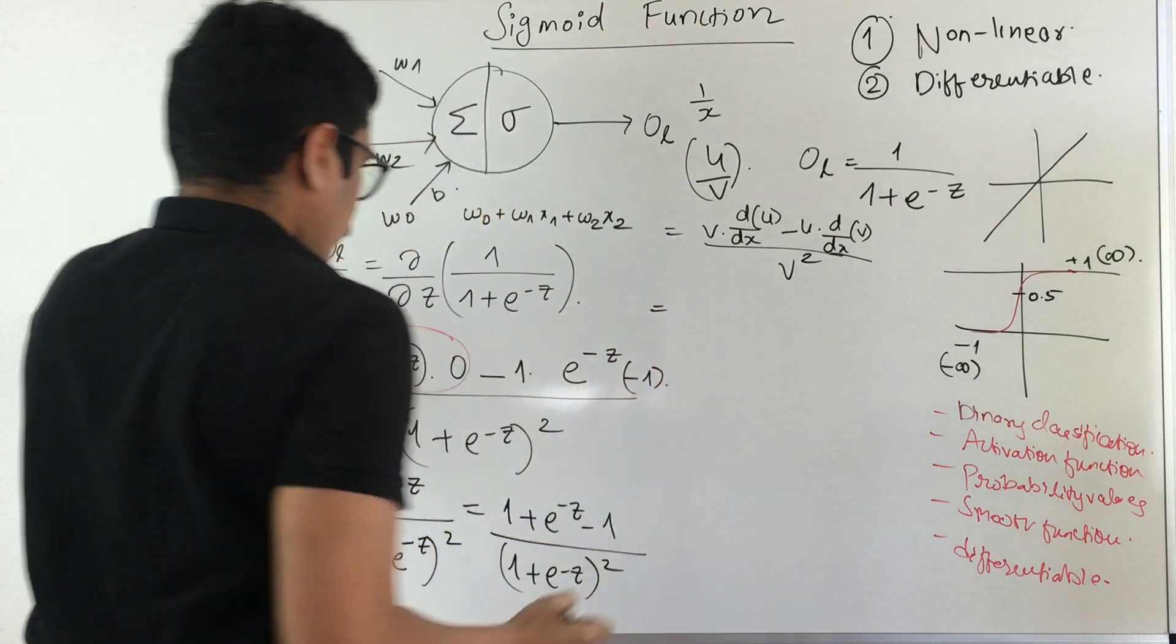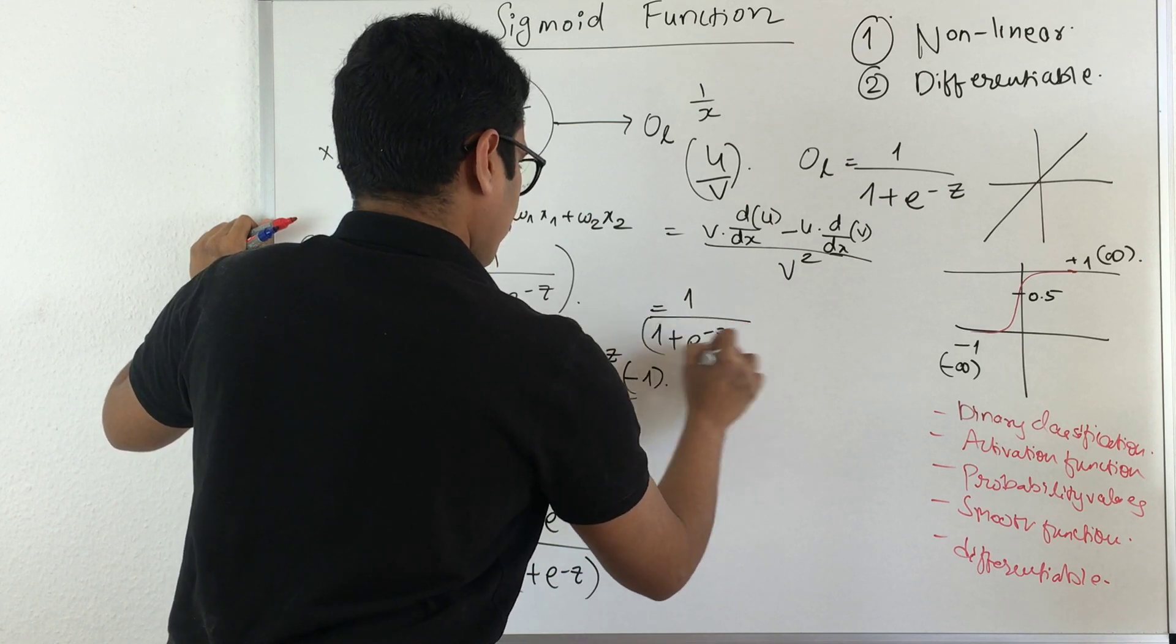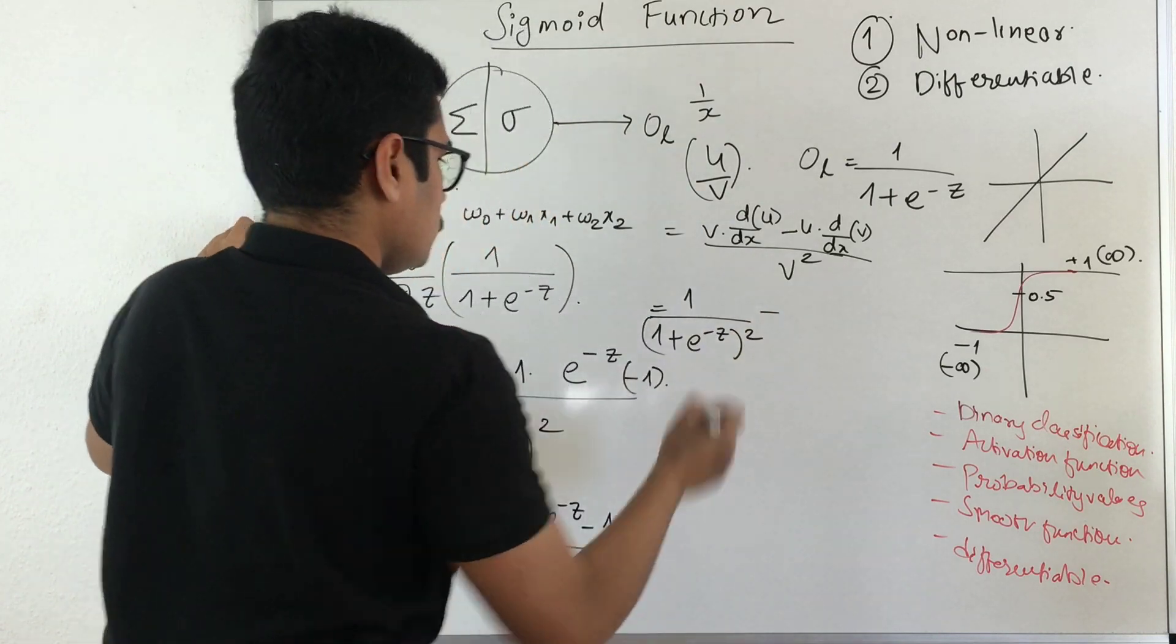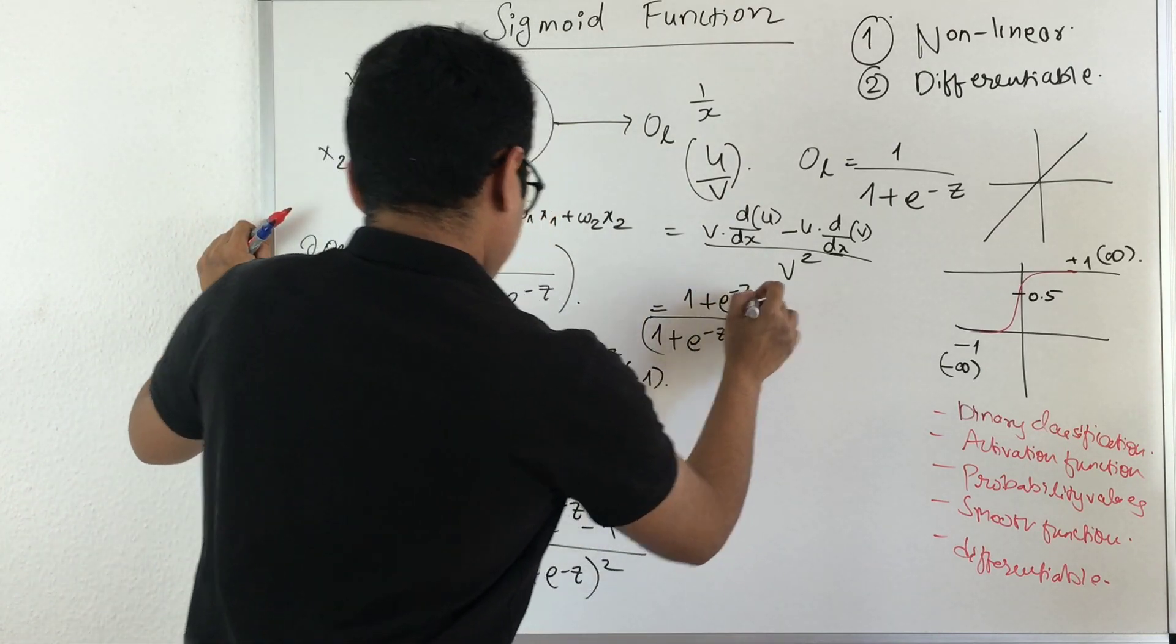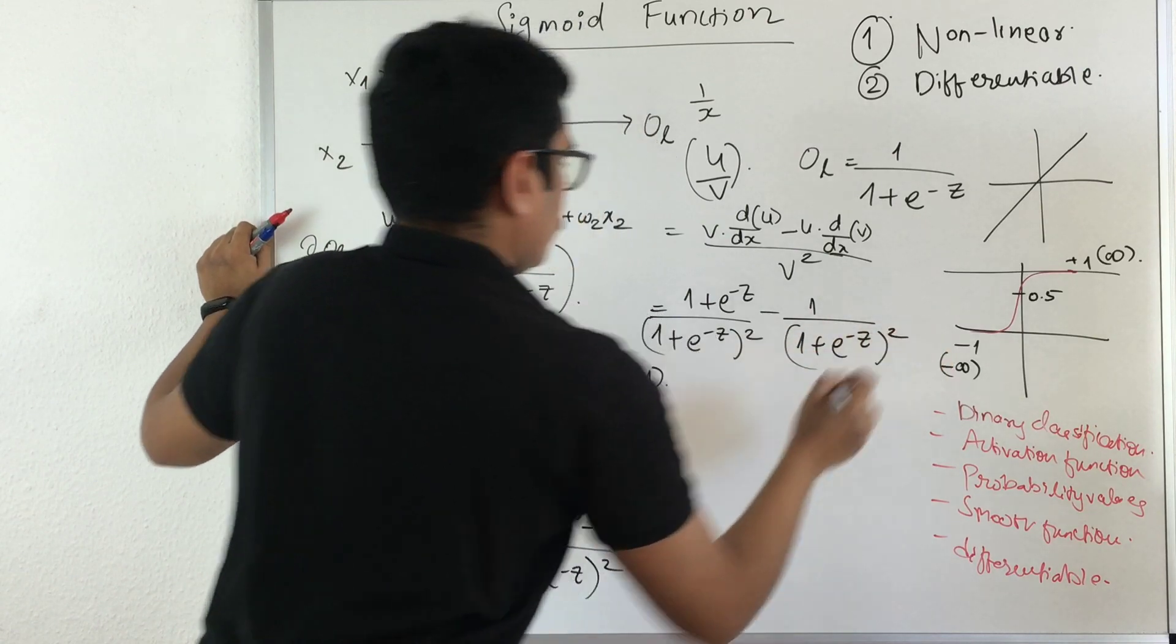Now you factorize this. You have 1 upon—you split the denominator here—and you have minus, so this is e^(-z) minus 1 upon (1 + e^(-z))^2.